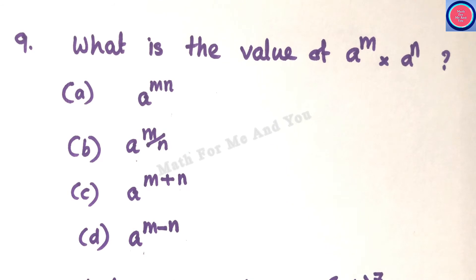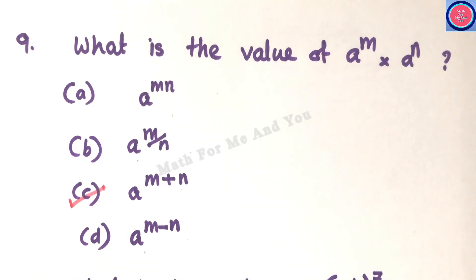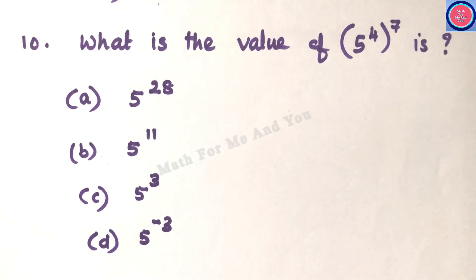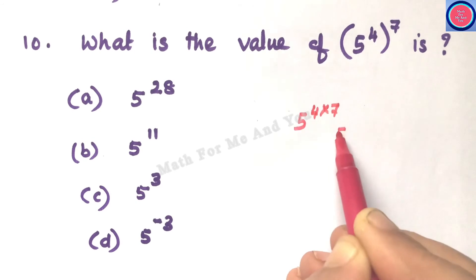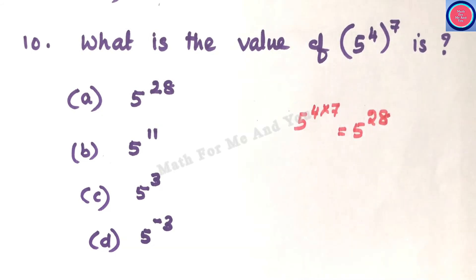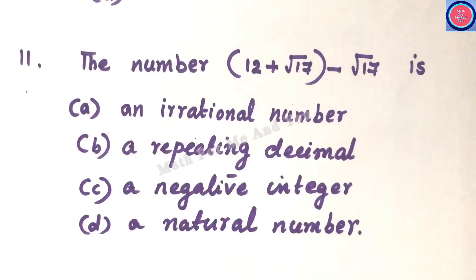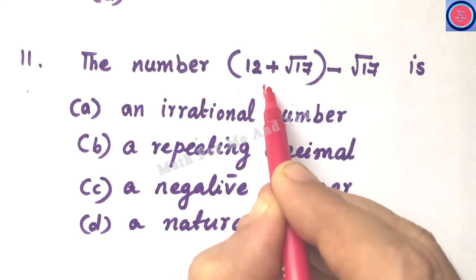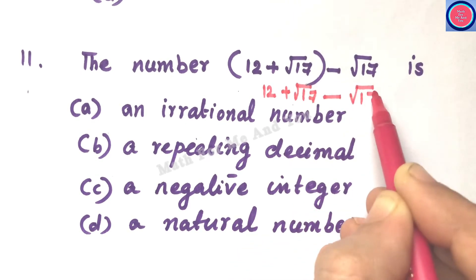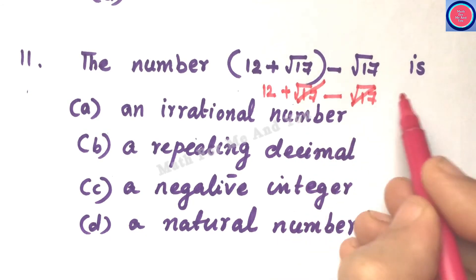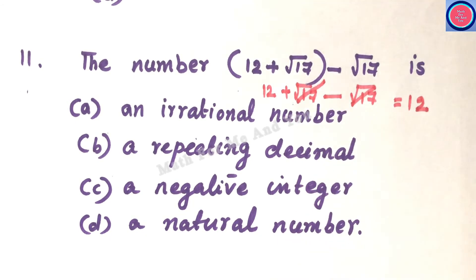Q9: What is the value of 8^m × 8^n? Using the law of exponents, 8^m × 8^n = 8^(m+n) — option C. Q10: What is the value of (5⁴)⁷? When a base has two successive powers, multiply them: 5^(4×7) = 5^28 — option A. Q11: What is the value of 12 + √17 − √17? The +√17 and −√17 cancel, leaving 12, which is a natural number — option D.